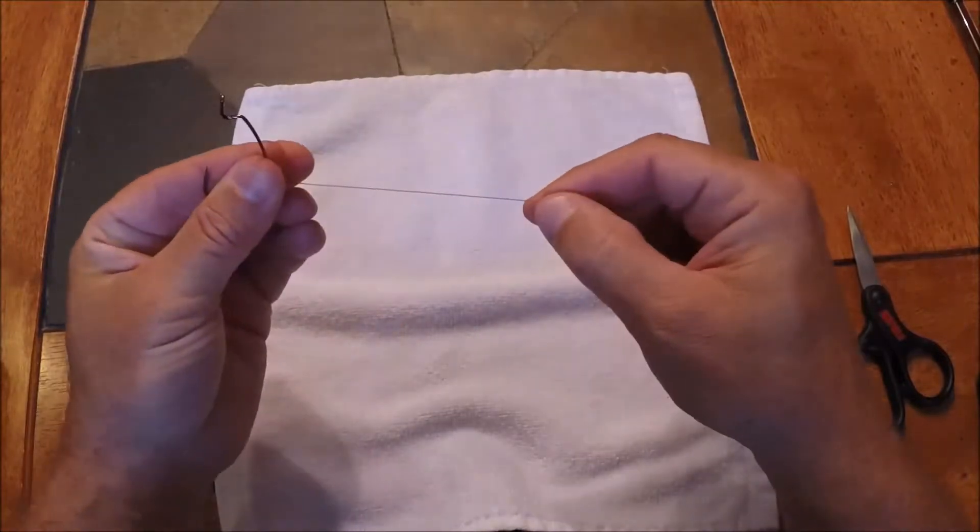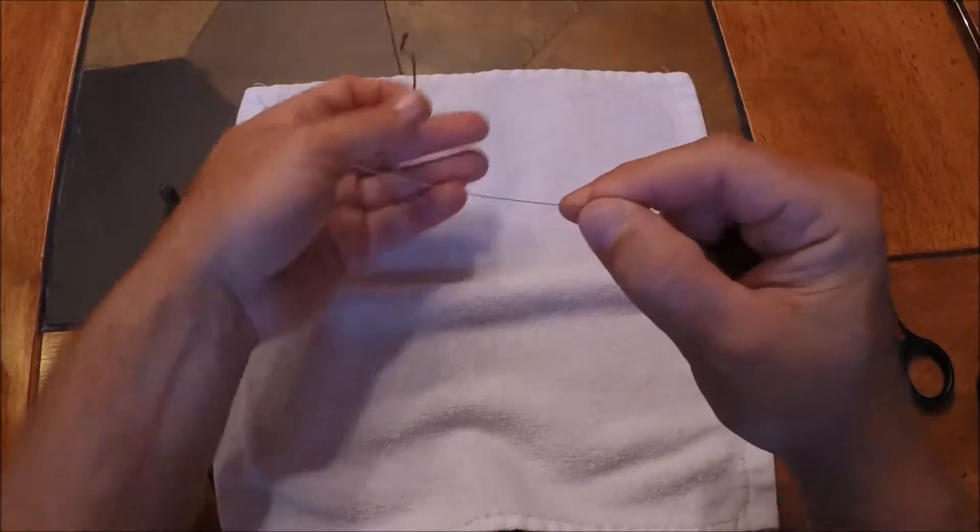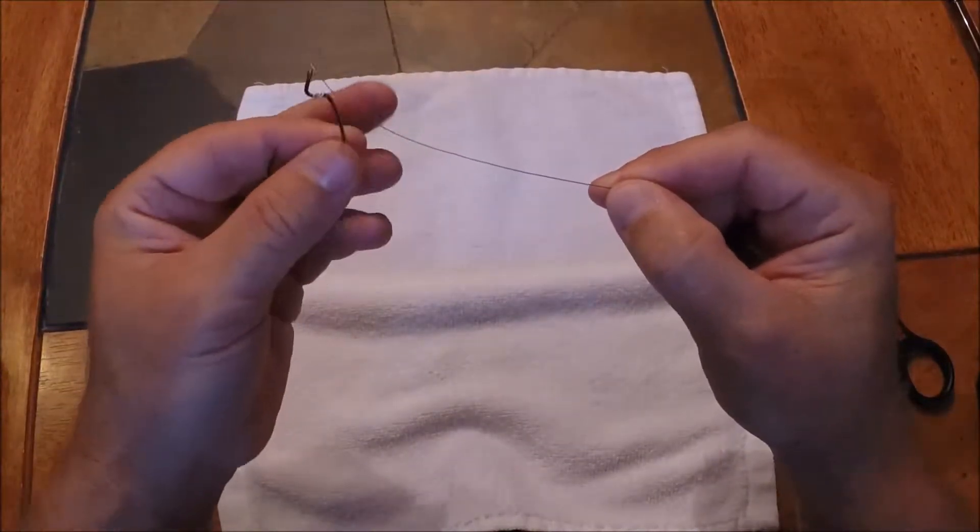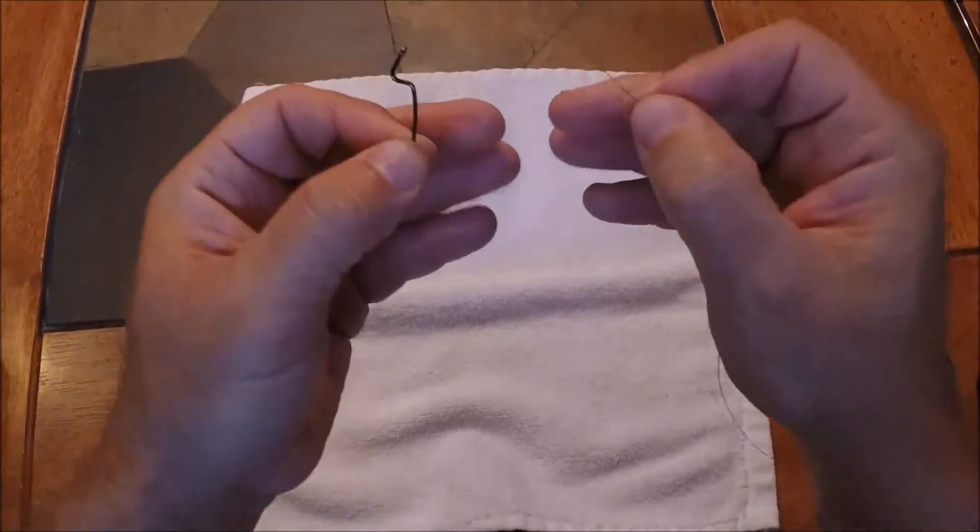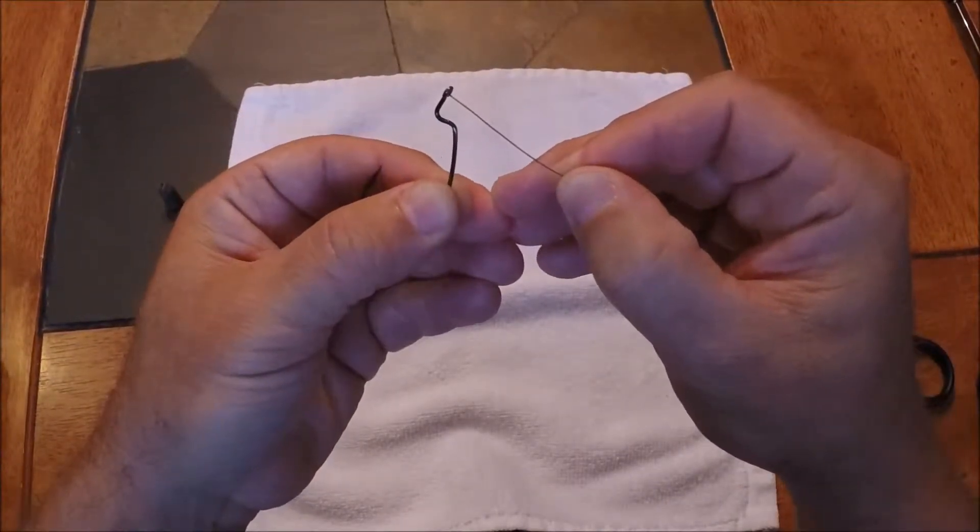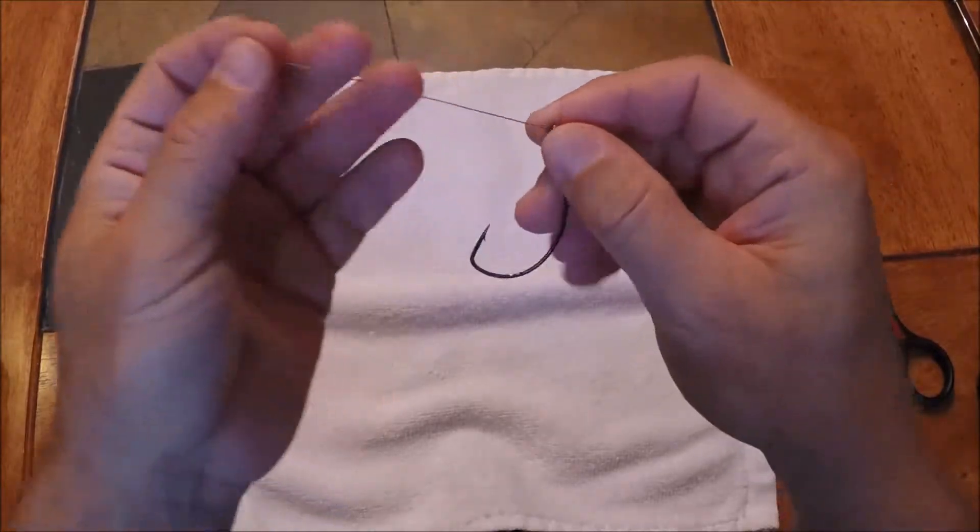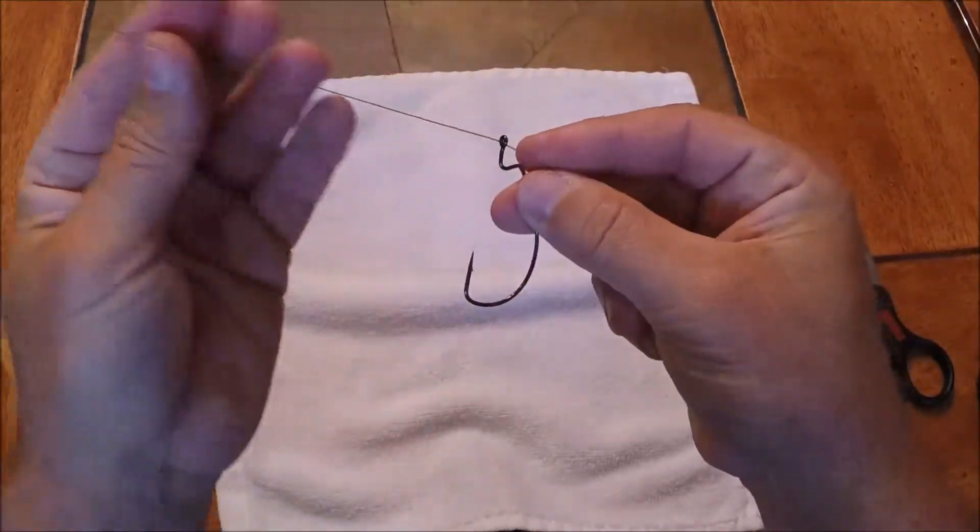I'm using a fairly thick 40 pound suffix braid against this white towel so that you can see what I'm doing. For the Palomar knot, you're going to go into the eyelet of the hook and then back through again.